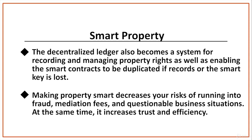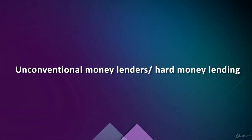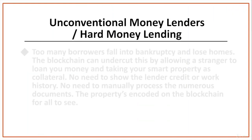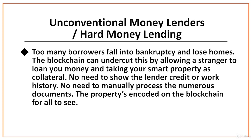An example of blockchain smart property is unconventional or hard moneylenders. Smart contracts can revitalize the traditional lending system. Unconventional moneylenders, for example hard moneylenders, service borrowers who have poor credit with needed loans while charging 2–10% of the loan amount and claiming their property as collateral, and too many borrowers fall into bankruptcy and lose their homes. But the blockchain can undercut this by allowing a stranger to loan you money and taking your smart property as collateral — no need to show the lender credit or work history, and no need to manually process numerous documents. The property is encoded on the blockchain for all to see.